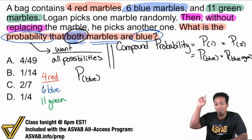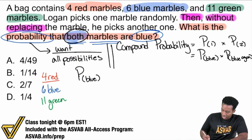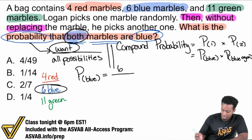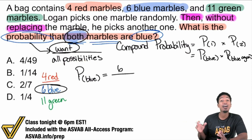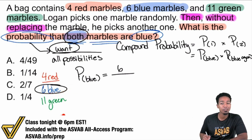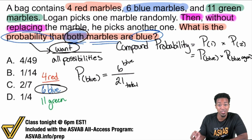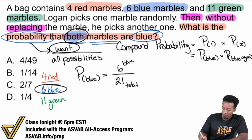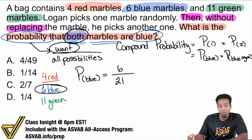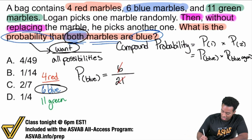To find the probability of picking blue for the first time, it's what we want — which is blue, and there are six of them — divided by the total possibilities. Not just everything else, everything that includes the blue. Four red plus six blue is 10, plus eleven green is 21. We have 21 total marbles, so six blue divided by 21 total. Simplifying by dividing both by three gives us two over seven. The probability of selecting blue is two over seven.